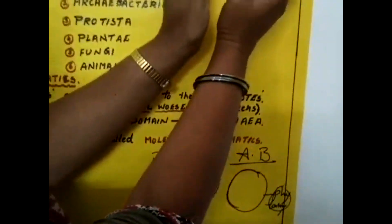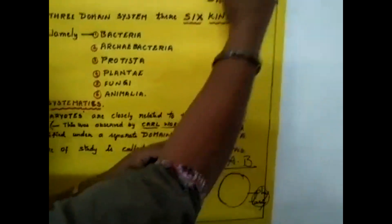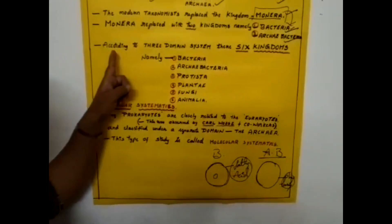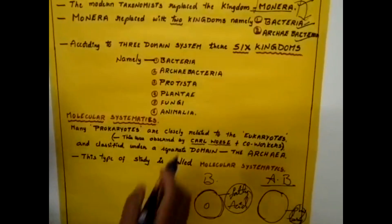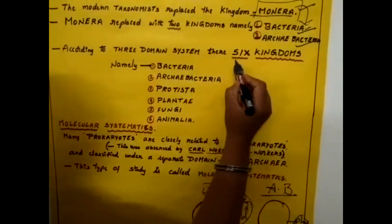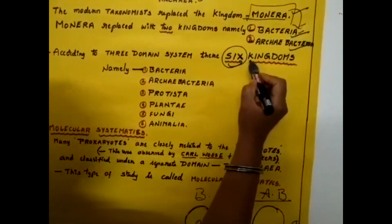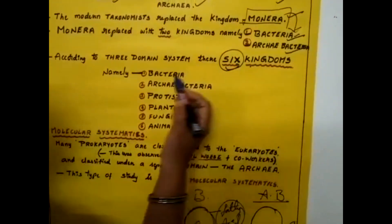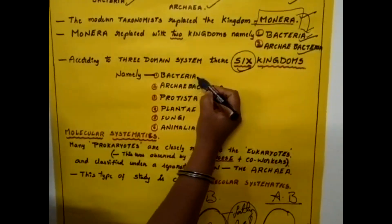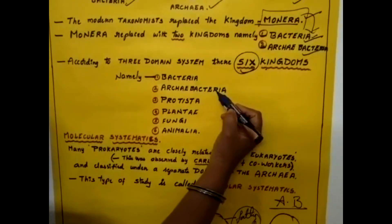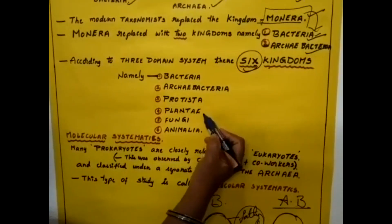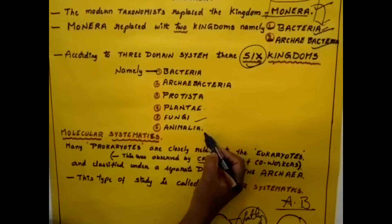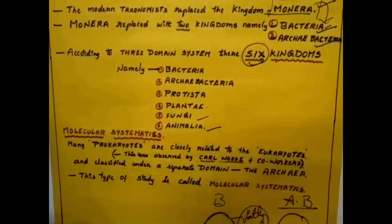These two kingdoms replaced Monera. Next, according to the 3-domain system, there are 6 kingdoms. They are: Bacteria, Archaebacteria, Protista, Plantae, Fungi, and Animalia.